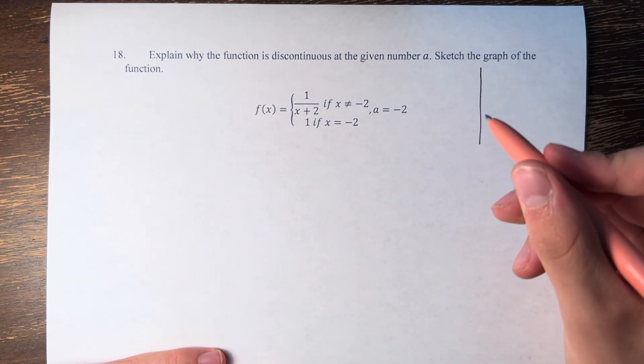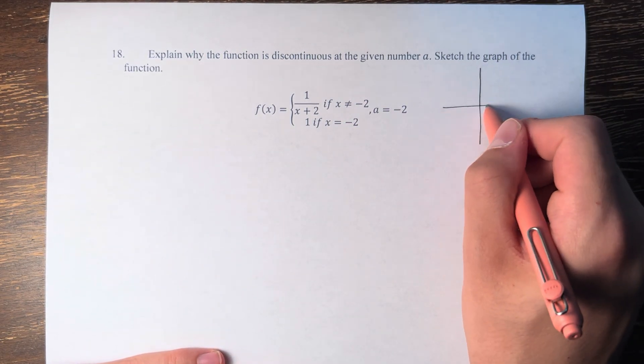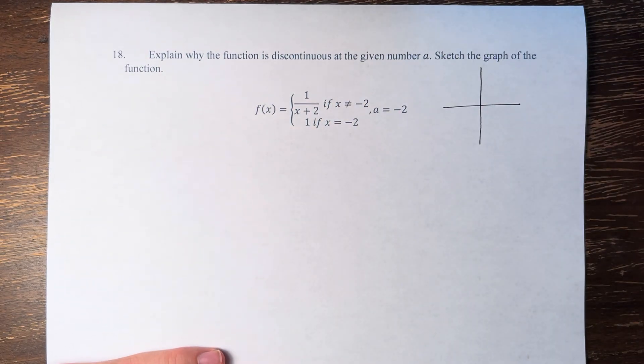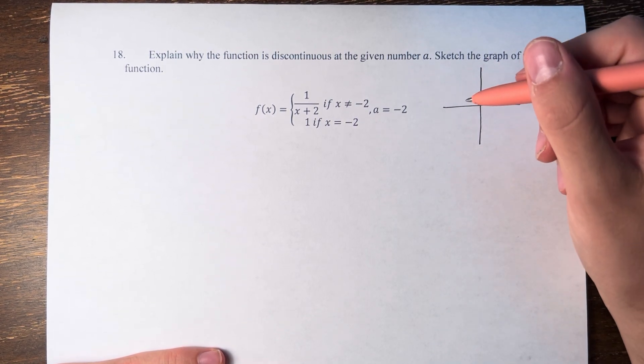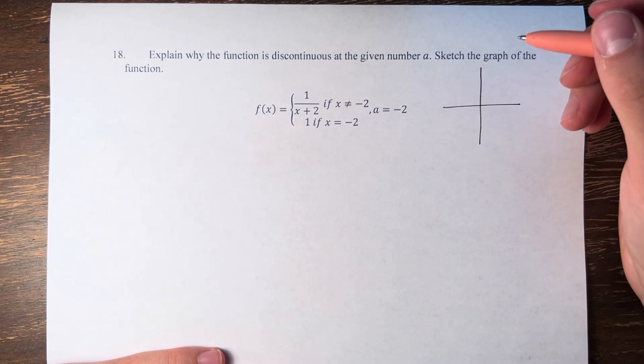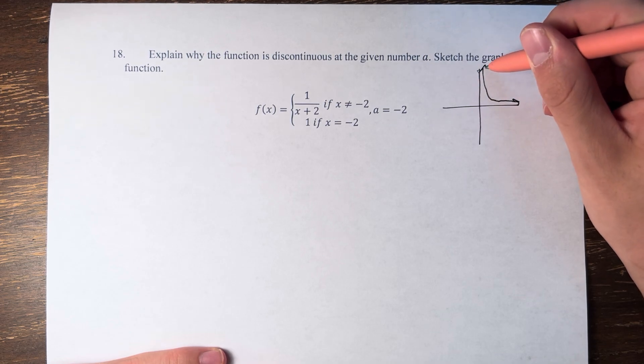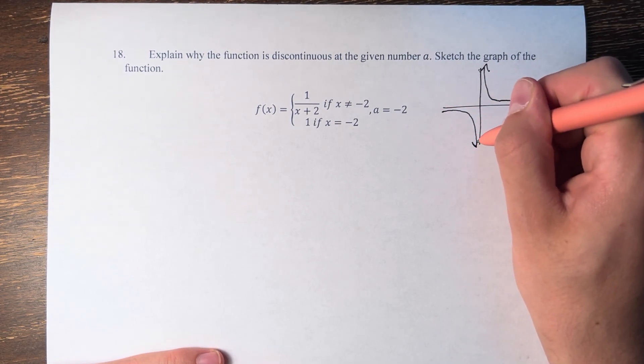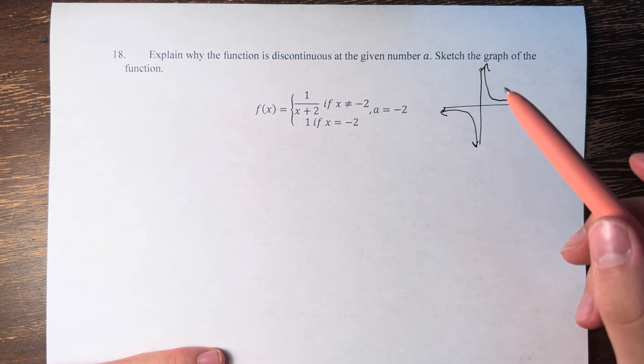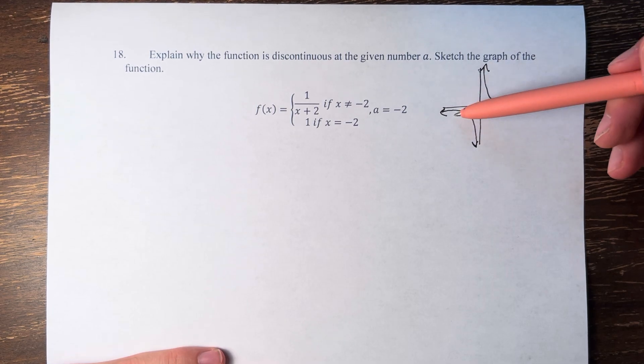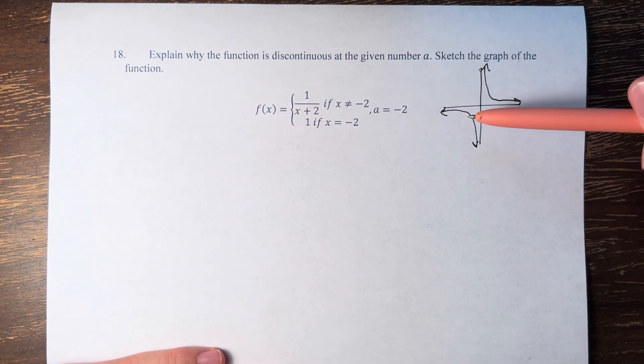So the first thing we can do is take the graph of 1 over x plus 2. We have to start with the graph of 1 over x, which is one of the functions that we had to learn the graph of in the previous chapter, and it looks something like this. As we approach 0, we go off to infinity and negative infinity, and as we go off to infinity or negative infinity, we get closer and closer to 0.